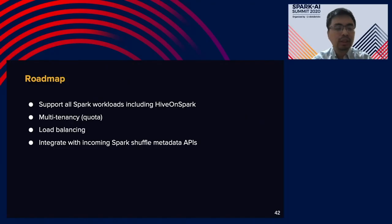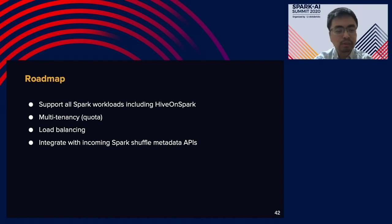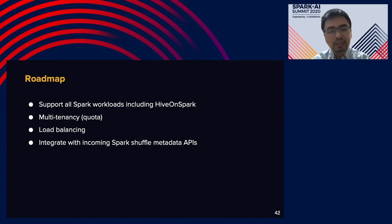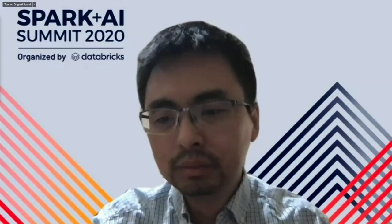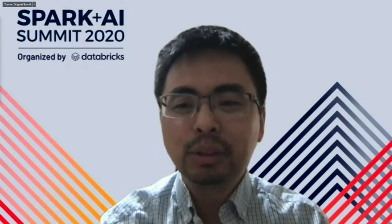We still have a lot of work to do. Our roadmap includes: supporting Hive on Spark, adding quota management for multi-tenancy environments, improving load balancing, and integrating with the new shuffle metadata API being discussed in the Spark community to support all kinds of remote shuffle services. We hope to open source it very soon. Thank you everyone, and if we have time, we can do Q&A.